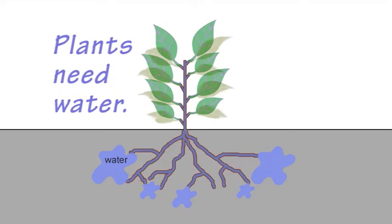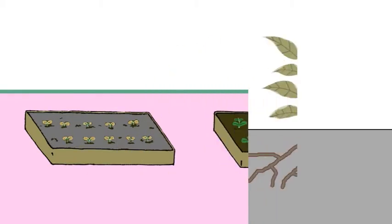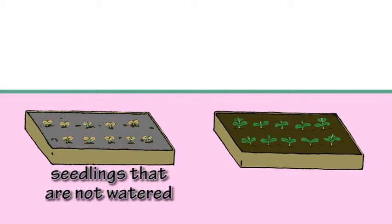If a plant can't get enough water, then it begins to wilt and eventually dies. Seedlings that aren't watered at all shrivel and die as the soil dries out and there is no water for the roots.